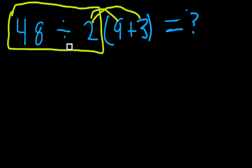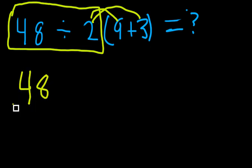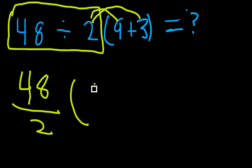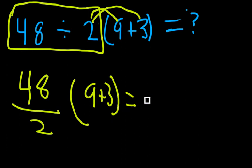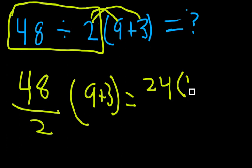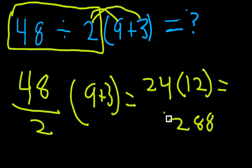Now, using our new table right here, we're going to be getting 48 divided by 2, times 9 plus 3, which is equal to 24 times 12, which equals 288.